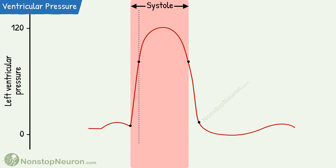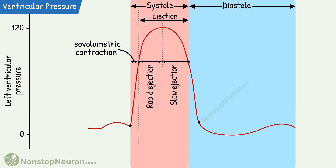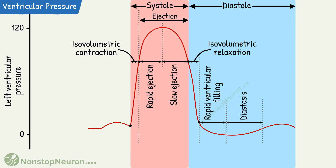In this graph, this part is ventricular systole and this is diastole. To be more precise, this is isovolumetric contraction during which there is a sharp rise in pressure. This is the ejection phase — during rapid ejection there is an increase in pressure reaching the maximum, and later during slow ejection the pressure falls. This is isovolumetric relaxation where we see a sharp fall in pressure. This is rapid ventricular filling, this is diastasis, and this is atrial systole.